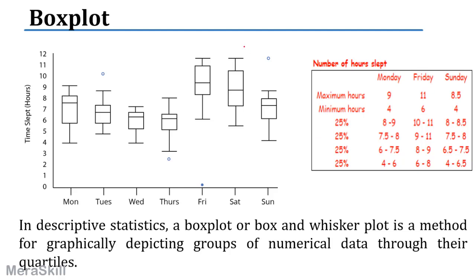Looking at Friday on the same box plot, the maximum hours of sleep goes up to eleven. The minimum also changes. Overall, sleep is much more on Friday than on Monday, Tuesday, Wednesday, or Thursday. Mid-week sleep is lower. On Friday and Saturday the sleep seems to be good — more hours overall. For example on Friday, 25% get 10 to 11 hours, 25% get 9 to 10, another 25% get 8 to 9, and the last 25% get 6 to 8 hours of sleep.